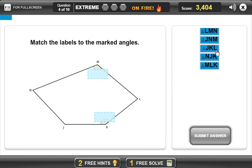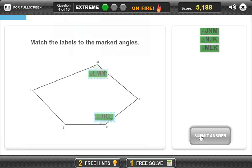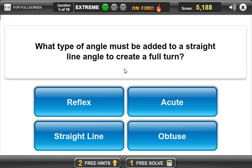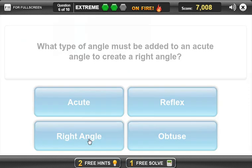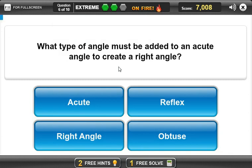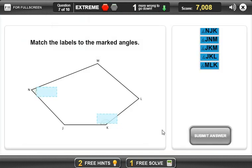N, M, L, M, L, M, L, M, J, K, L. Straight line to create a full term. What type of angle must be added to an acute angle to create a right angle? M, N, J or J and M.